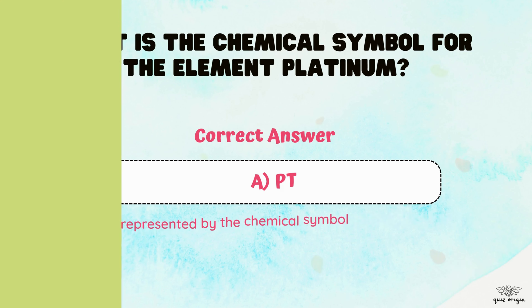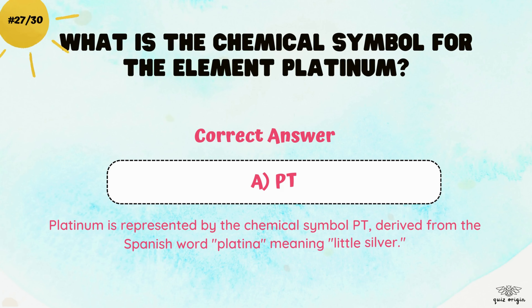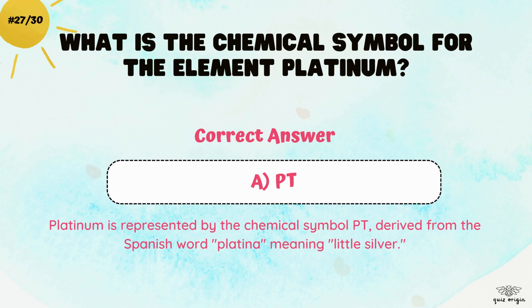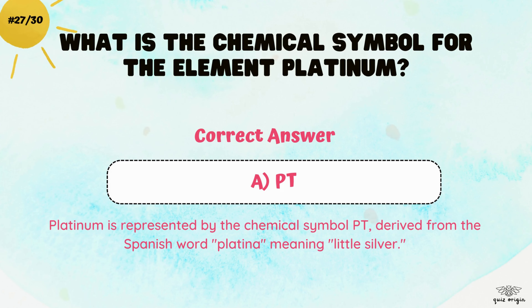The correct answer is A. Pt. Platinum is represented by the chemical symbol Pt, derived from the Spanish word platina, meaning little silver.